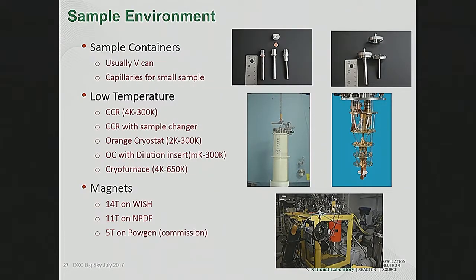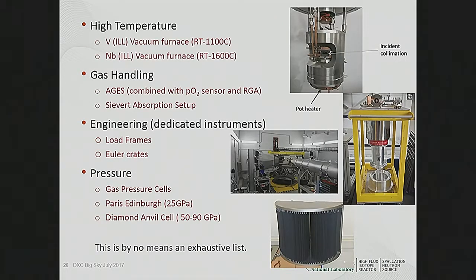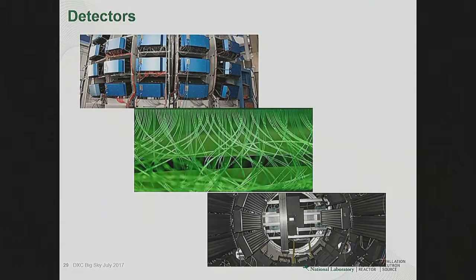We have lots of sample environments: we can do cold, hot, magnetic field — and this is not an exhaustive list, it's something we develop all the time. For engineering diffraction, we can put in a load frame. We have collimators to cut out background. If a sample environment isn't available, contact your instrument scientist and maybe we can come up with something. For detectors, most instruments use helium-3 tubes; some, like those used on POWGEN, use scintillator detectors with scintillation materials and wavelength-shifting fibers. These technologies came from the high energy physics community.